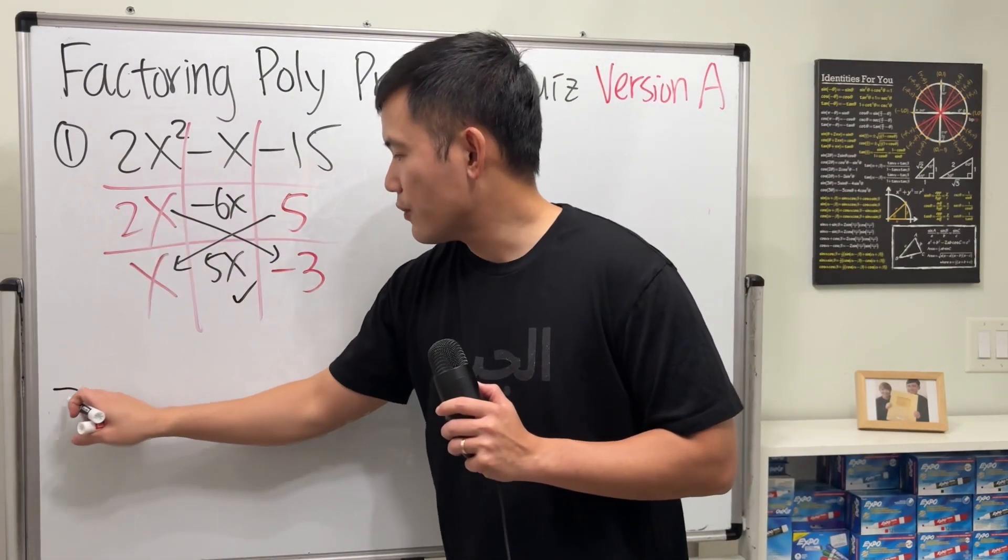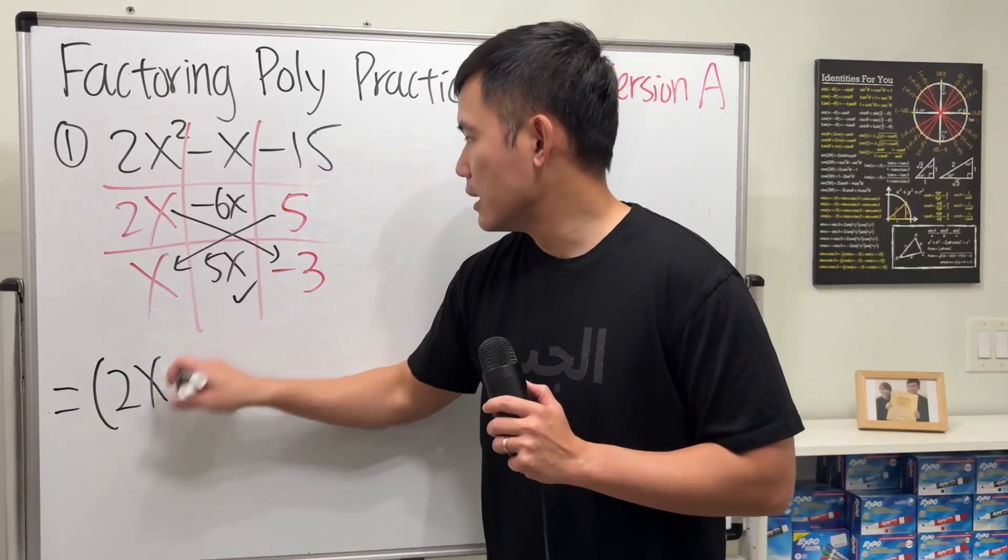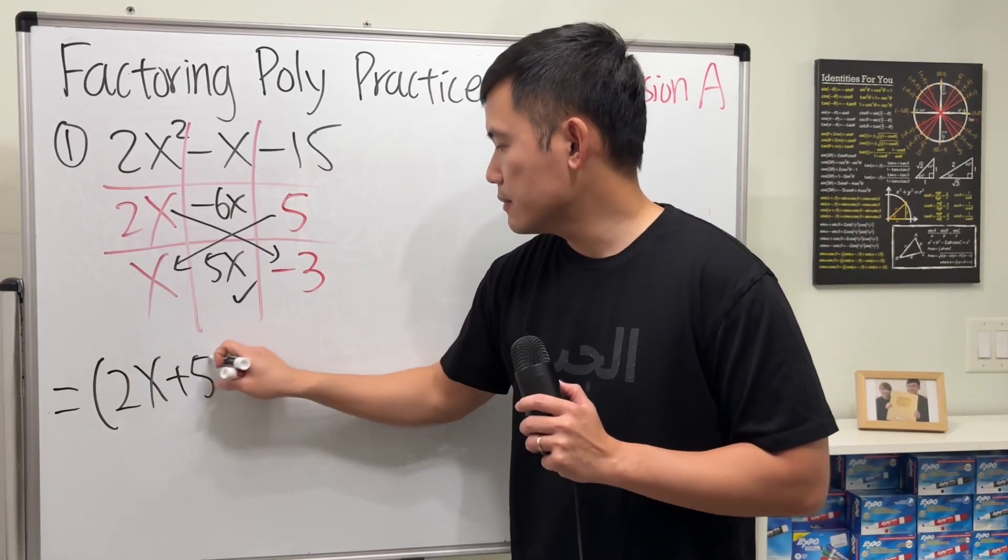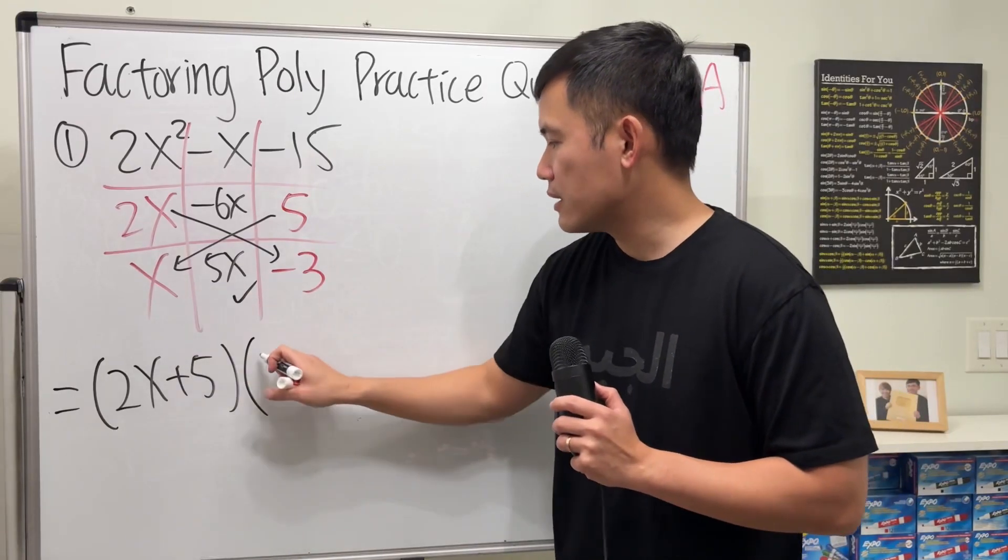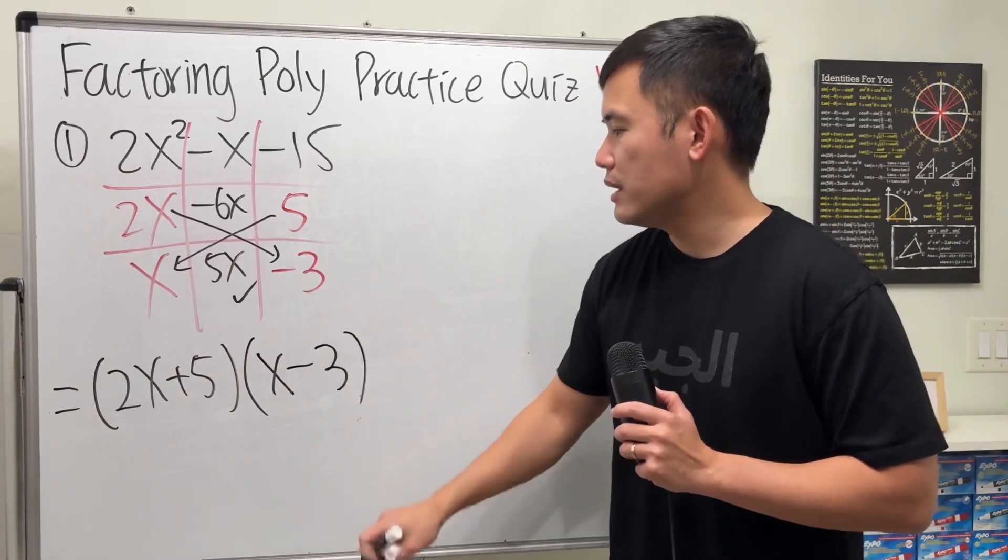Then we can see the answer for this is just 2x plus 5. Make sure you go across when you write down the answer. And then the other factor is x minus 3, and then we are done.